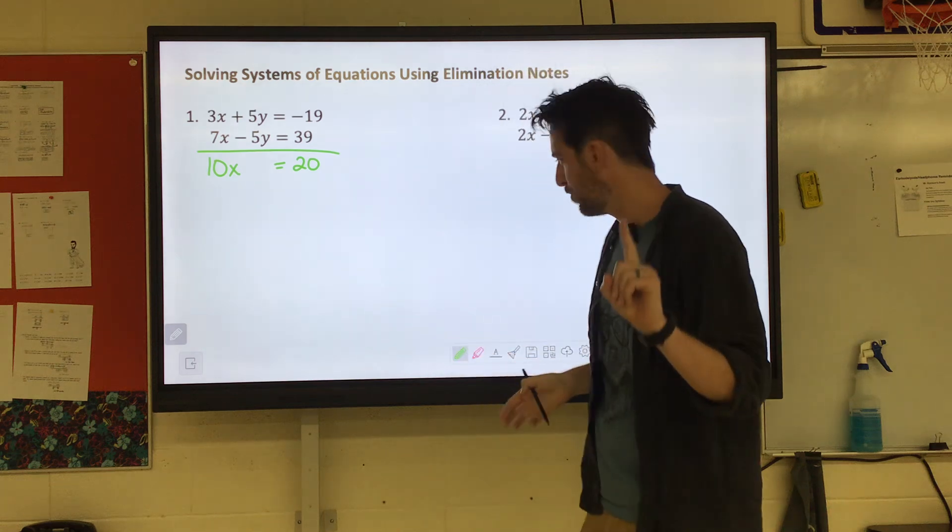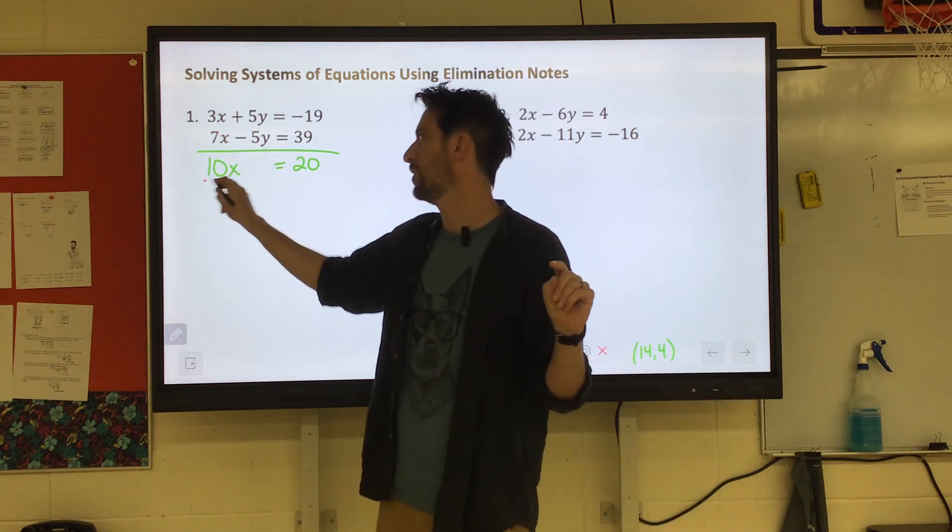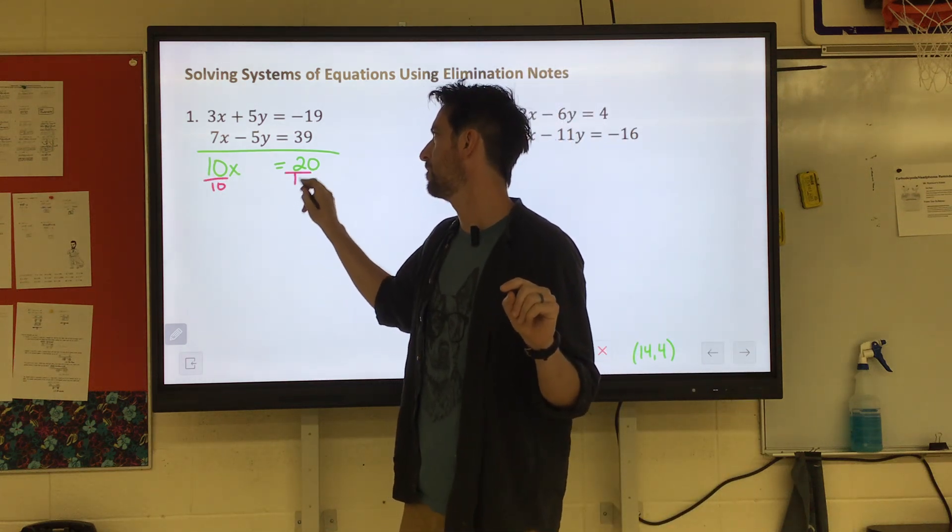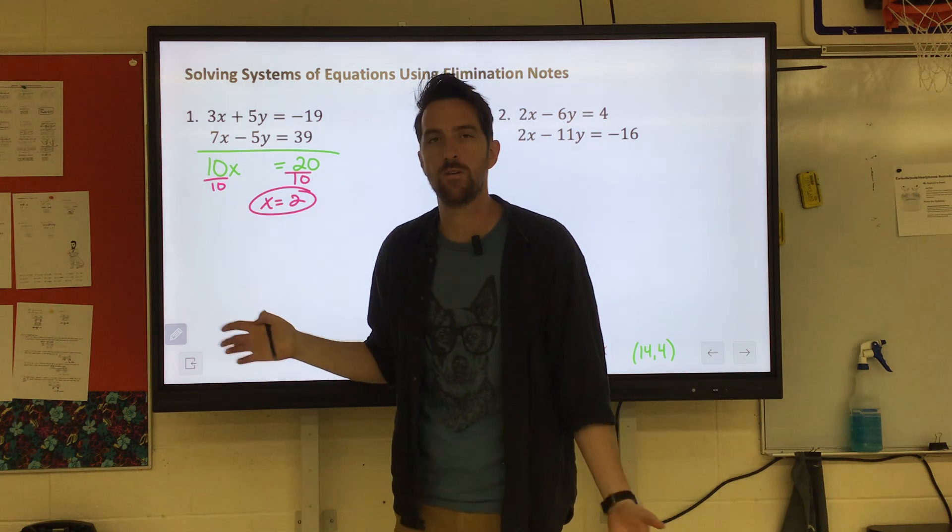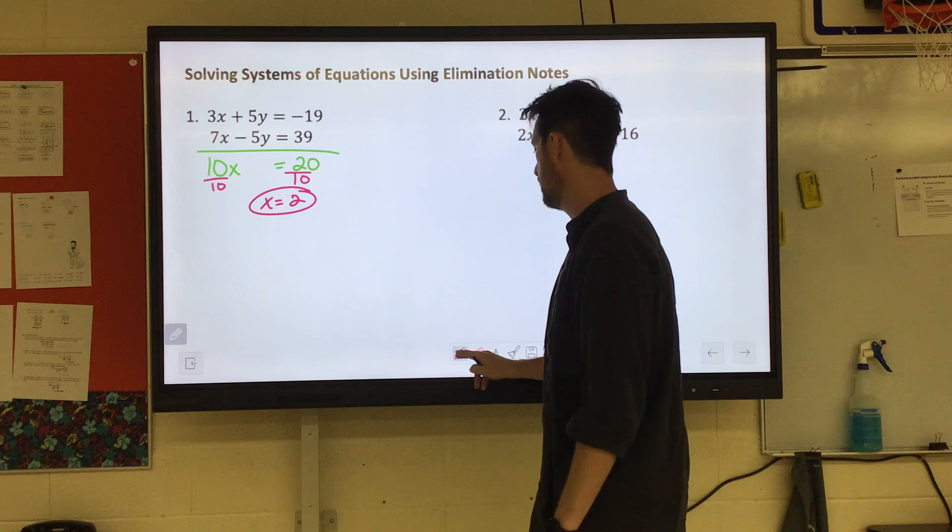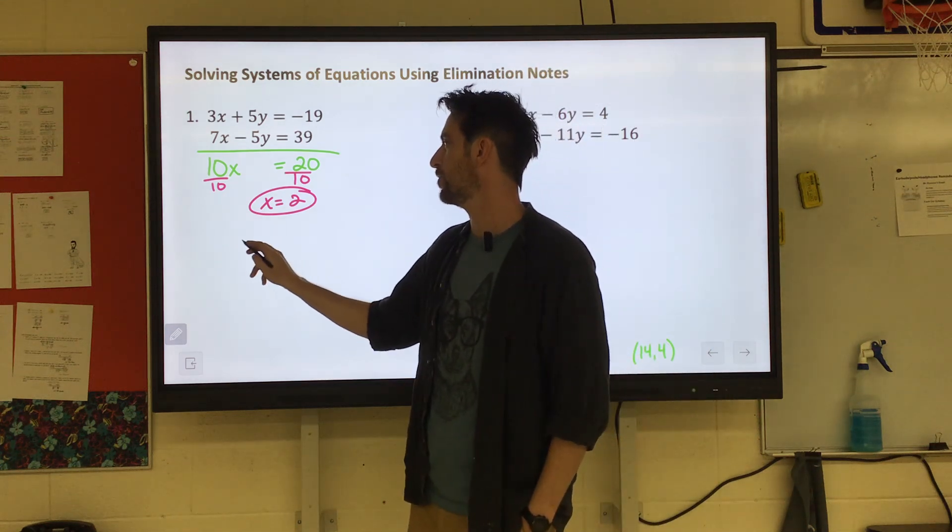10X equals 20. We're one step away from knowing X. So we can divide both sides by 10. X equals 2. We already have half of our coordinate. Now we need the Y. So we can use either equation. Let's say I use the first one.